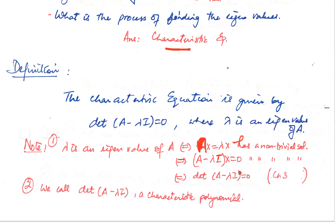When I say the homogeneous equation (A minus lambda I)x equals 0 has a non-trivial solution, we're saying the columns are linearly dependent. Linear dependence means the matrix is not invertible, and a non-invertible matrix has determinant 0. So all three chapters — linear systems, invertibility, and determinants — are connected right here in these three lines.